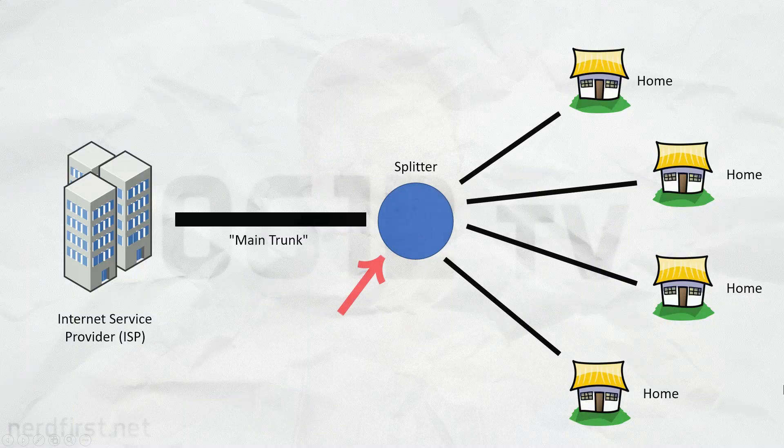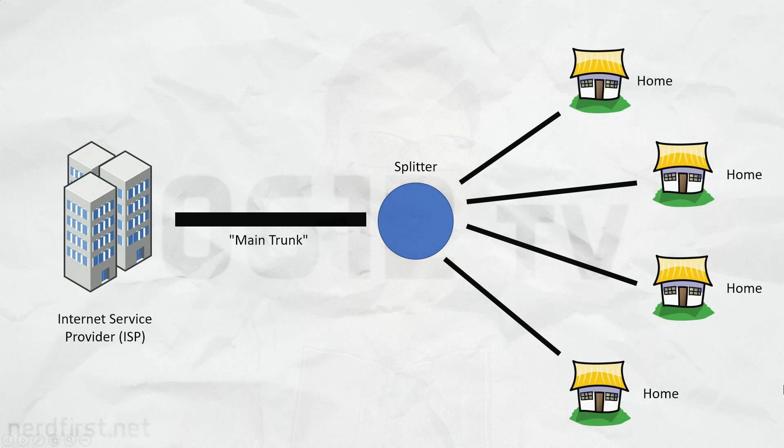This trunk eventually needs to get to a device that splits the signal. Somehow this signal needs to be cut up — this signal is meant for you, this signal is meant for your neighbor — you have to cut it up and send it to the right place. So there's got to be this thing in the middle that splits out to the individual houses.